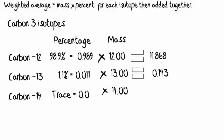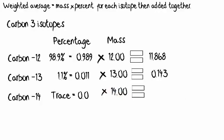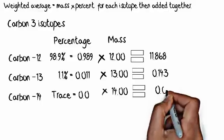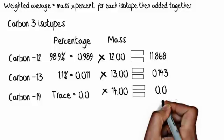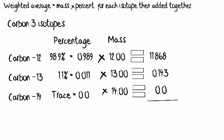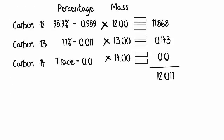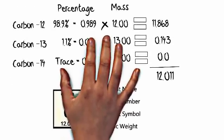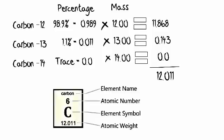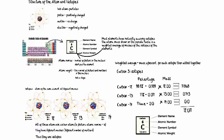0.989 times 12 is 11.868. 0.011 times 13 is 0.143, and 0.0 times 14 is 0.0. You add those numbers together, you get 12.011. Where have we seen that number before? That is the atomic weight listed on the periodic table.